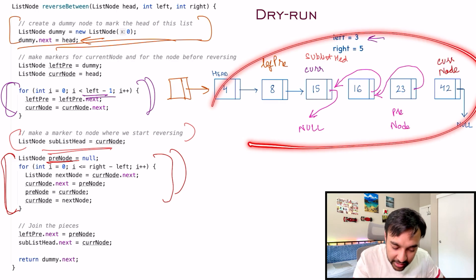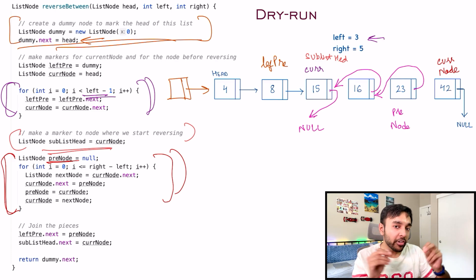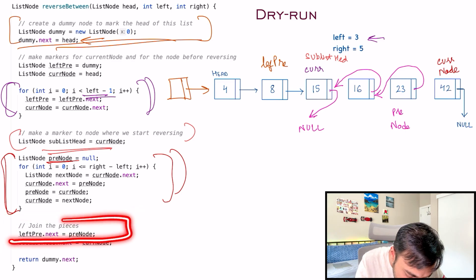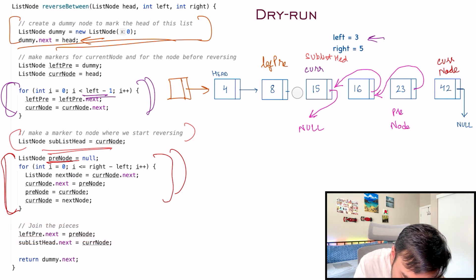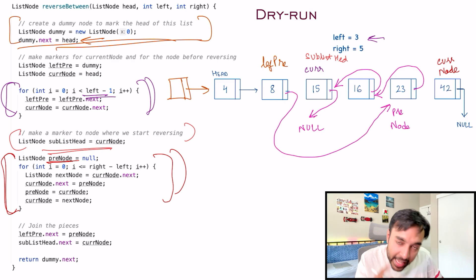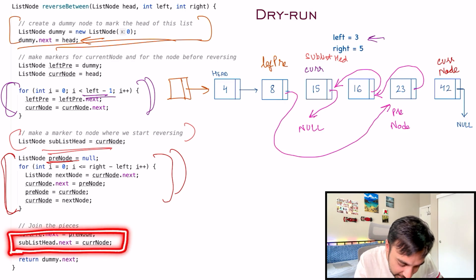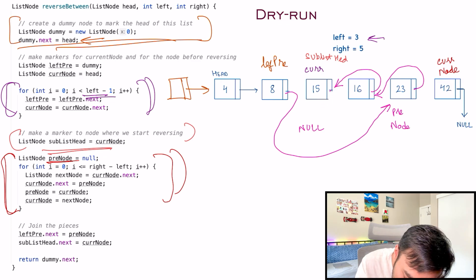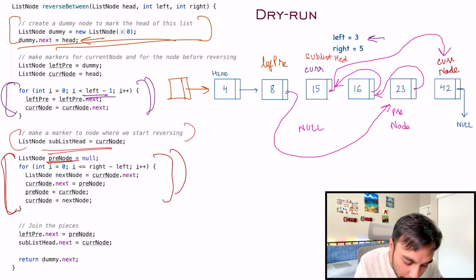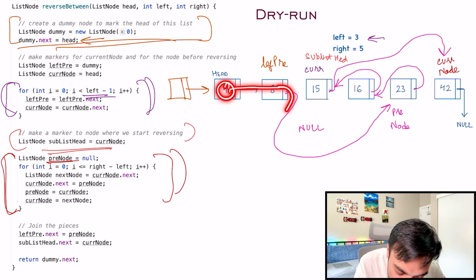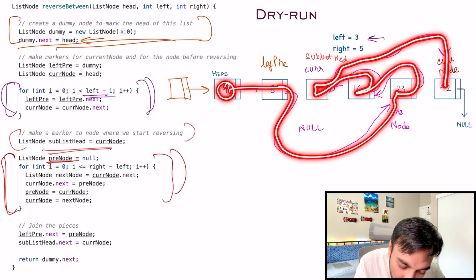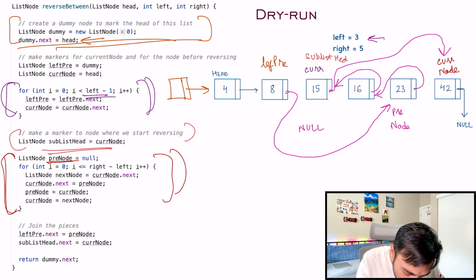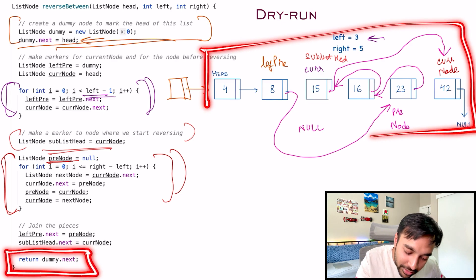After this loop ends, my linked list ends up looking like the reversed sublist. Now we have to join the remaining pieces with two commands: left-pre.next equals pre-node — so left-pre.next points at pre-node — and sub-list-head.next equals current node — so the sub-list head's next pointer, which was null, now points at current node. If you look at the list now: 4, 8, 23, 16, 15, 42, and then null. We had the dummy node, so to return this list you just return dummy.next and this list is returned as your answer.